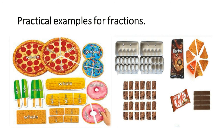One whole pizza was cut into 6 equal pieces. One ice cream is cut into 2 equal halves. One biscuit is cut into 4 equal parts. One corn is cut into 3 equal parts. Children, hope you understand about fractions. Thank you.